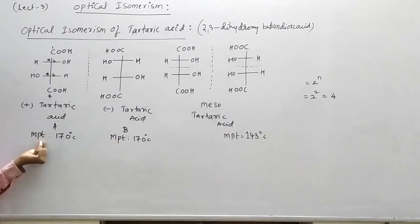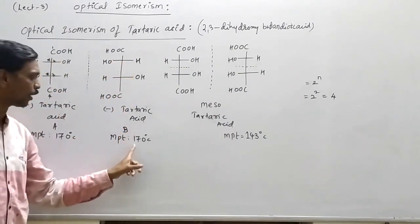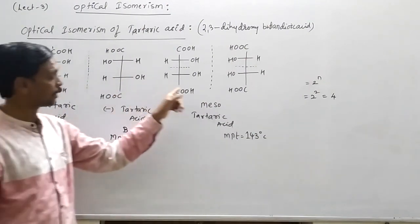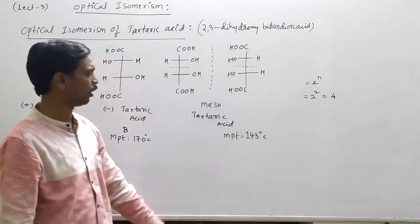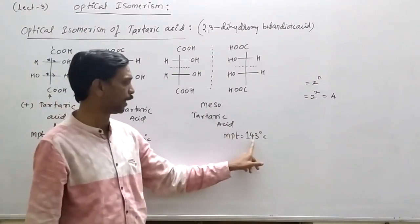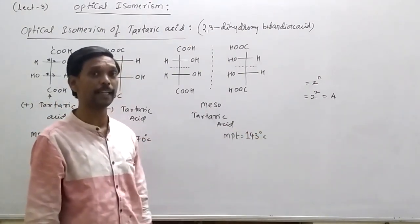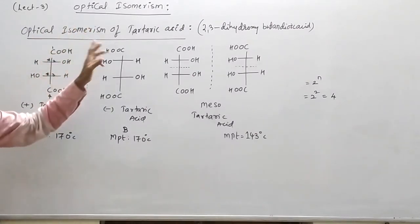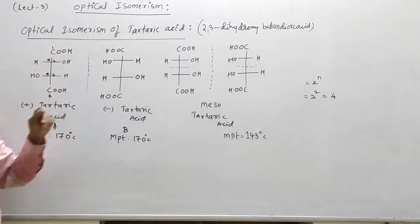Here, this compound's melting point is 170 degrees, and this compound's melting point is 170 degrees, because they are mirror images. But between C and D, whichever you take, observe the melting point is 143 degree centigrade. This is optical isomerism of tartaric acid.